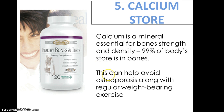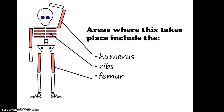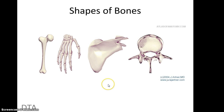Calcium storage can help avoid osteoporosis, which we'll talk about slightly later on. The areas where this takes place are usually the humerus, ribs, and the femur.